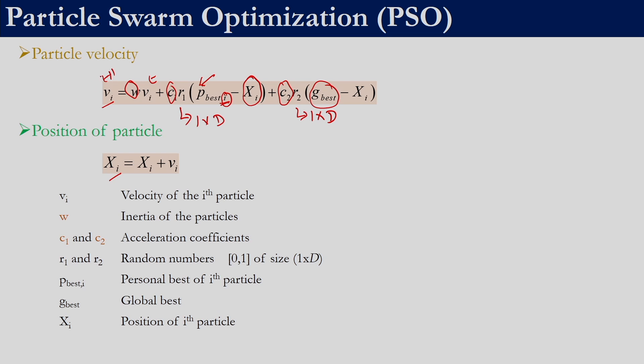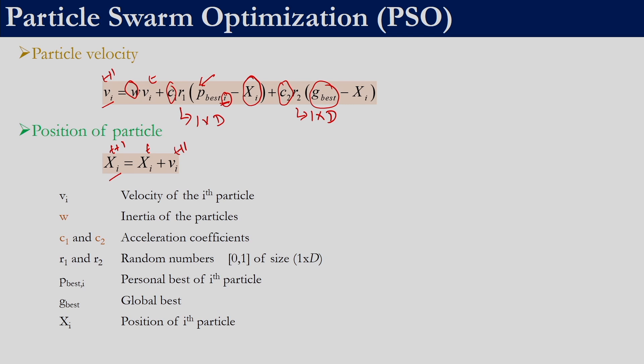g_best is the global best of the entire population — remember this is not g_best of i, but only g_best. Once we find out the particle velocity we can update the position: x_i at iteration (t+1) equals x_i at iteration t plus the velocity obtained at the (t+1)-th generation. This is how the variation operator is used to generate a new solution in PSO.